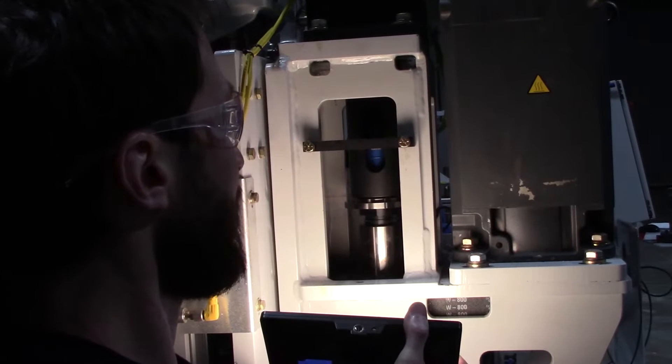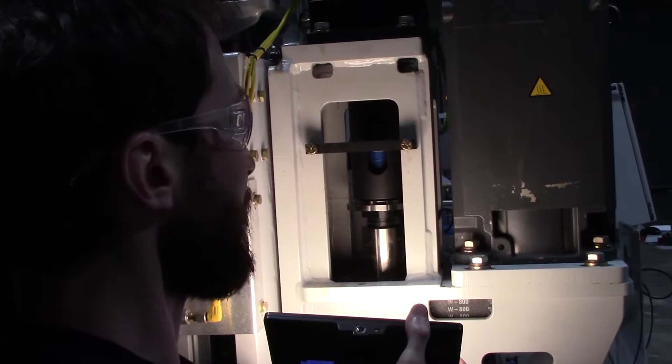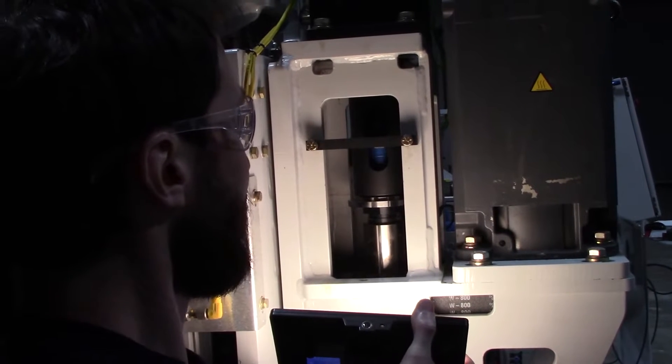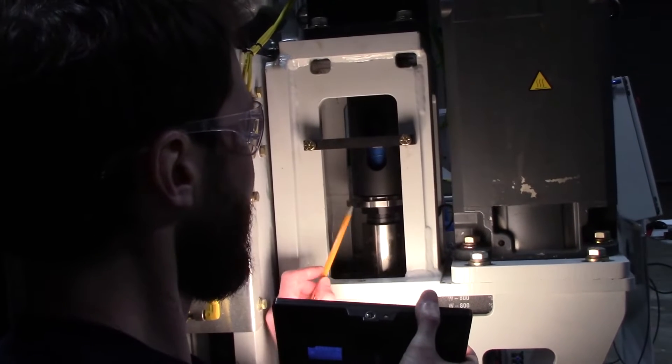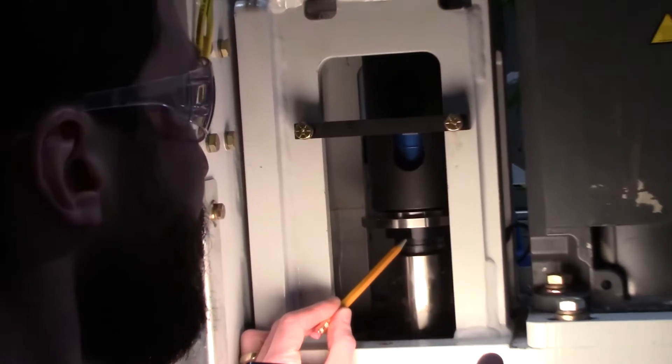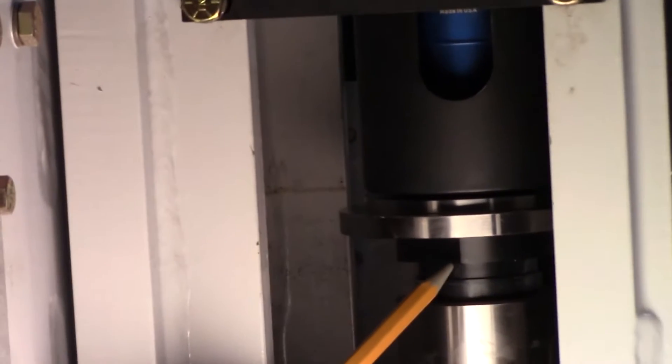Now the first thing we need to check is we have to make sure we have the correct style of drawbar in this spindle. The easiest way to do that is to look in here where these wrench flats are for changing out the water union. This has got to be black.